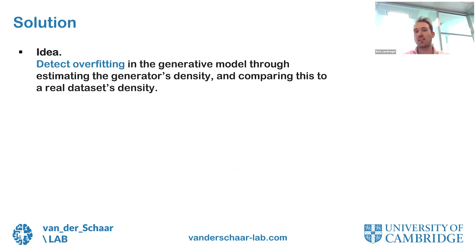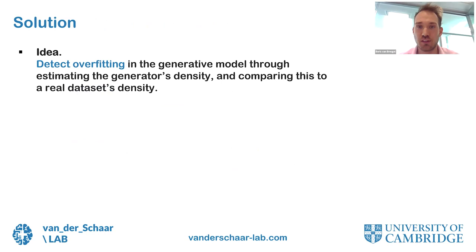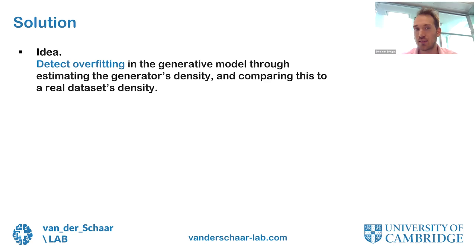Our idea is to detect overfitting in the generative model by estimating the generated density and comparing it to the real data density. Generative models tend to overfit slightly to training data, so around training data points the density will be slightly higher. If we can find peaks in the generated density relative to the real density, we can identify where the model likely trained. We call our solution DOMIAS — Detecting Overfitting for Membership Inference Attacks against Synthetic data.